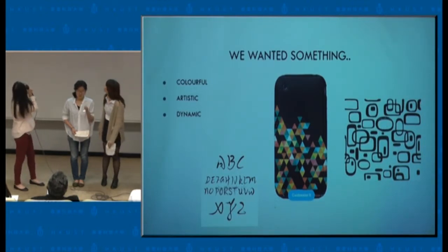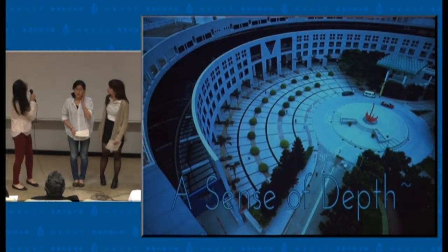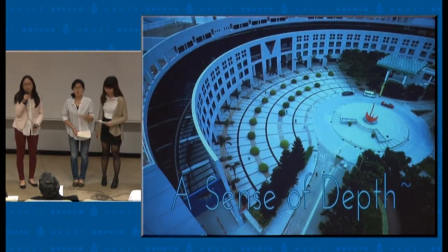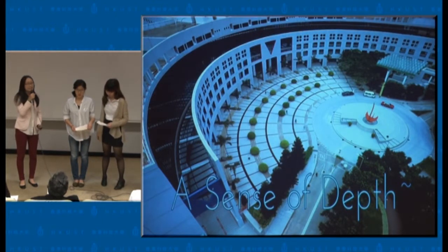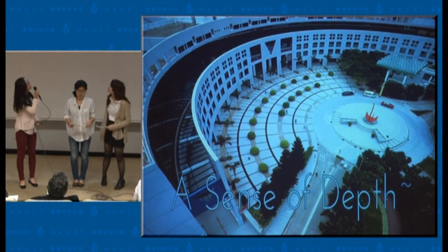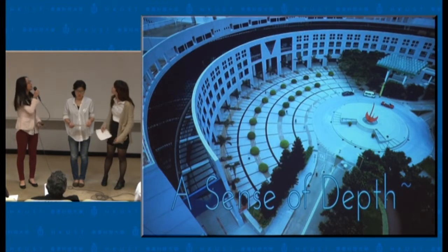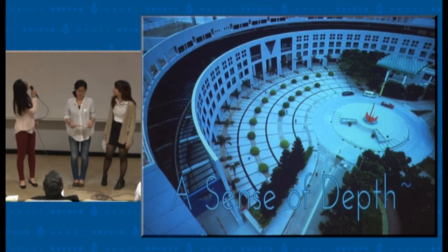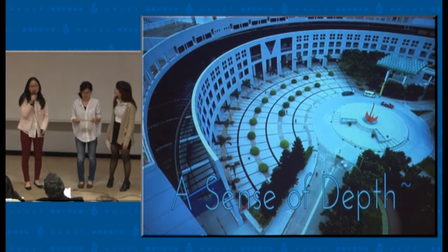We wanted something colourful, artistic, and dynamic. It is always a good idea to incorporate a Google search into your inspiration process. This aerial photo of the iconic HKUST Piazza is what we came across. The aesthetic geometry, balance, and most importantly, its sense of depth is what made it catch our eyes.